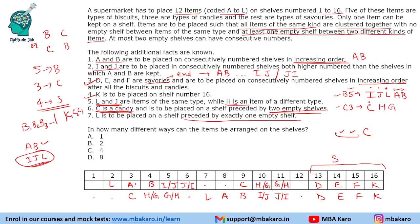Question 1: In how many different ways can the items be arranged on these shelves? We should not just say two cases equals two ways — that is wrong. Within each case, I and J can be in 2 orders and H and G can be in 2 orders, giving 2×2 = 4 combinations per case. So total there are 4 + 4 = 8 ways of arranging the items.